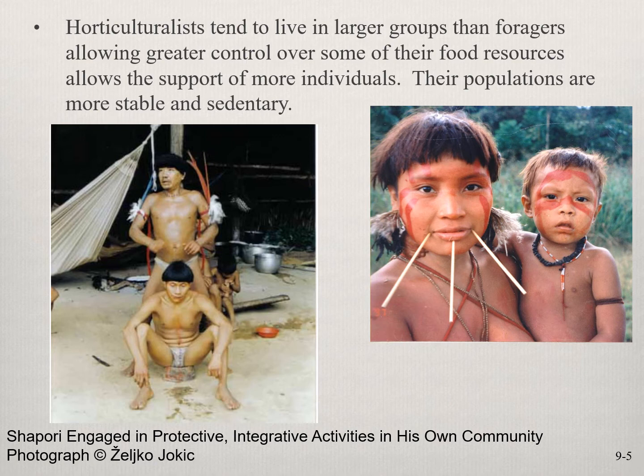Foragers tend to live in smaller groups — give or take 30 people in a band. Horticultural communities can hold 50 to 100 people because they're producing their own food, so the land can support more people. They're more stable and more sedentary.